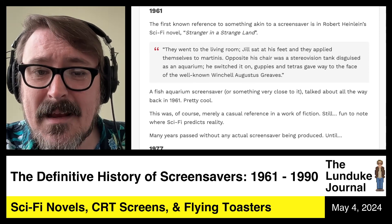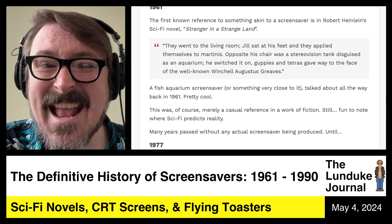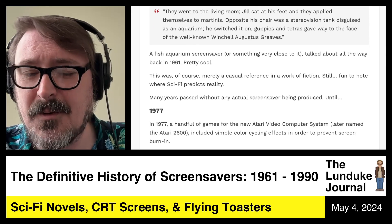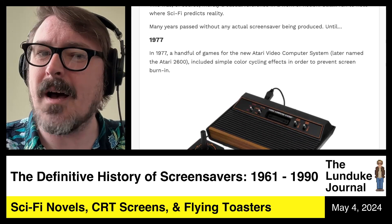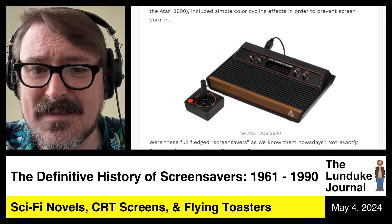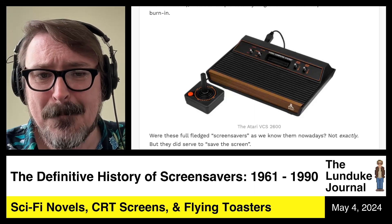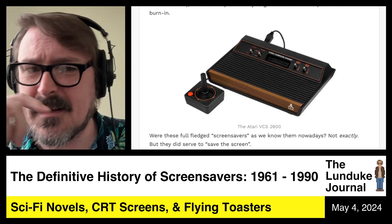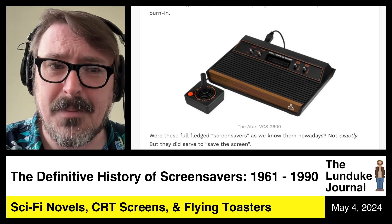Many years passed without any actual screen savers being produced until 1977. A handful of games for the new Atari Video Computer System, later renamed the Atari 2600, included simple color cycling effects in order to prevent screen burn-in. Were these full-fledged screen savers as we know them today? Not exactly. But they did serve to save the screen — after the game sat for a while, they did a color cycling thing that reduced the amount of screen burn-in that occurred.